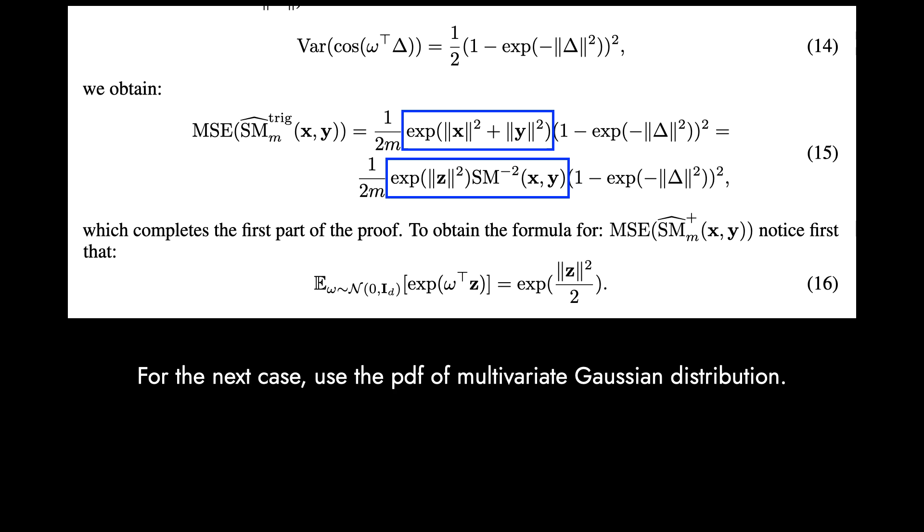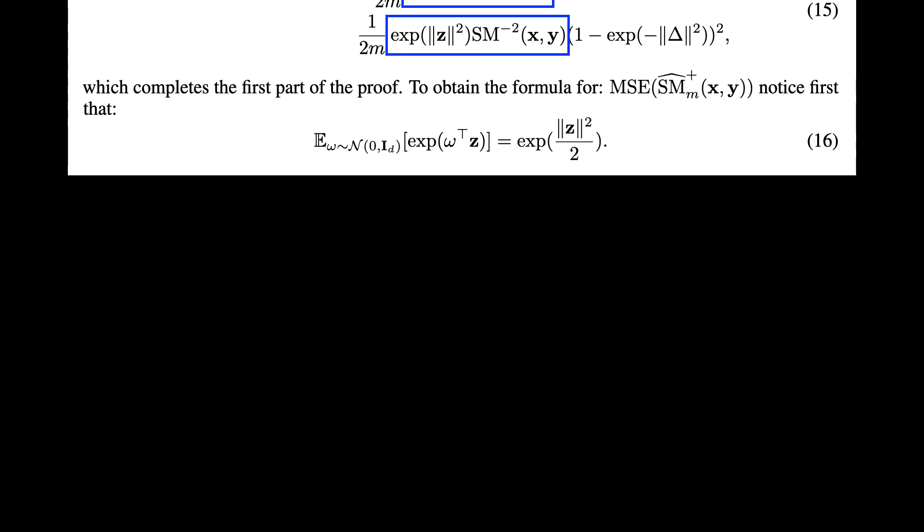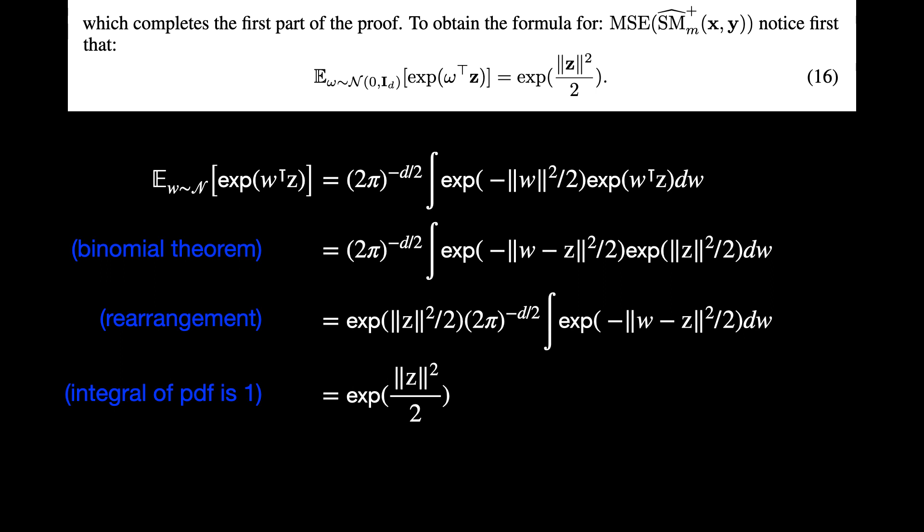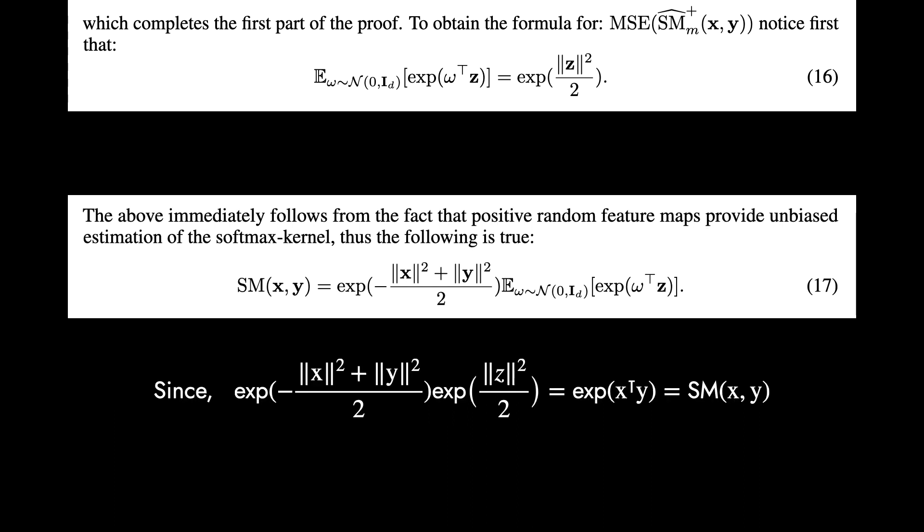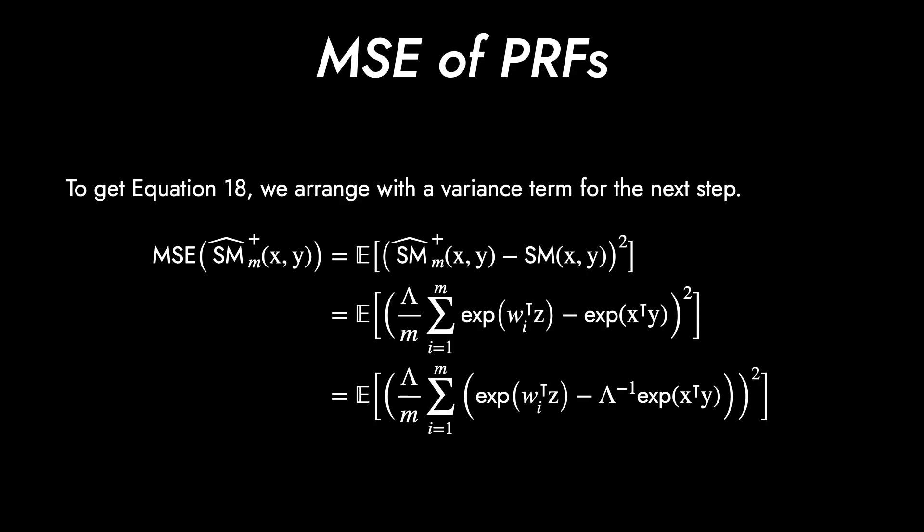Here is the check. And we follow this lemma from Yu et al. This lemma states that the variance of cosine with W transpose delta has a specific form in equation 14. The notation of Z, x plus y, we can rewrite to be the function of SM. This is the end of the first method. Now for the second method, we use the pdf of multivariate Gaussian distribution. Let's check it out. A couple of rearrangements result in the form in equation 16.